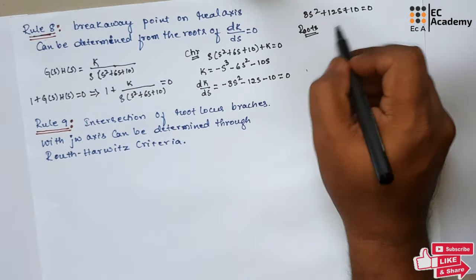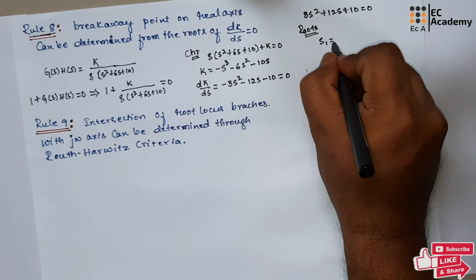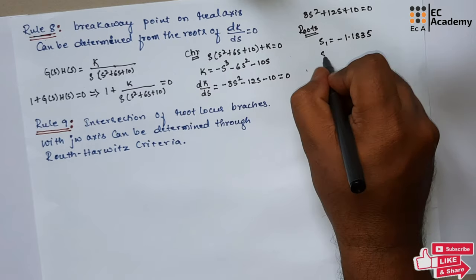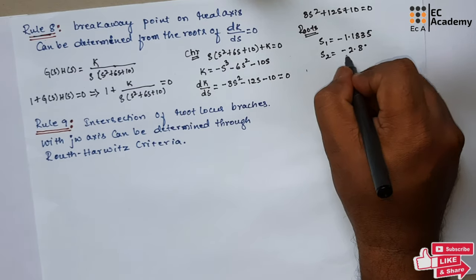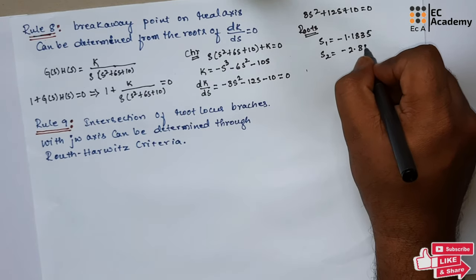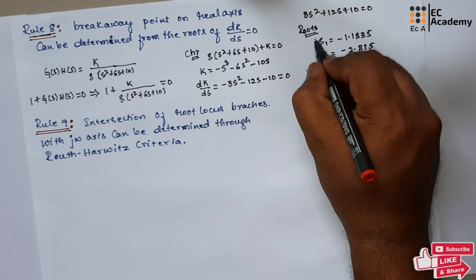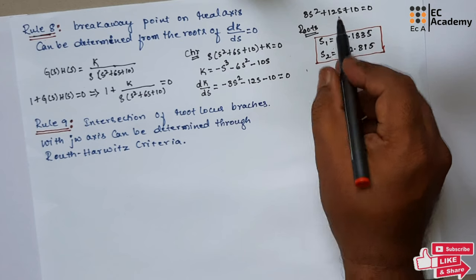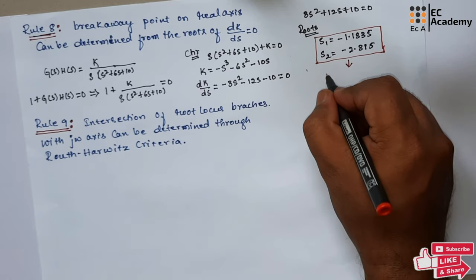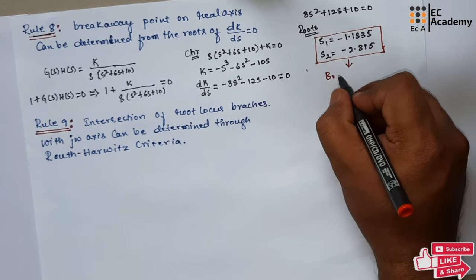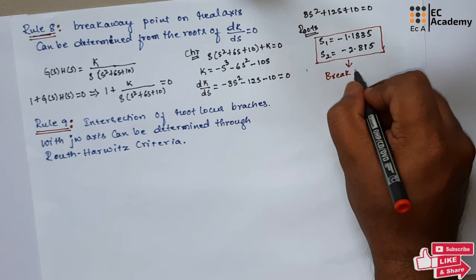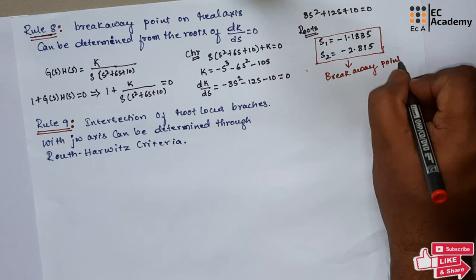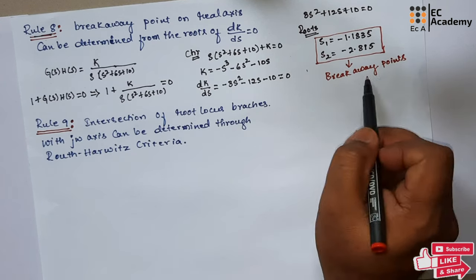Solving the roots of this equation, we get S₁ = −1.1835 and S₂ = −2.815. These two values are the breakaway points.